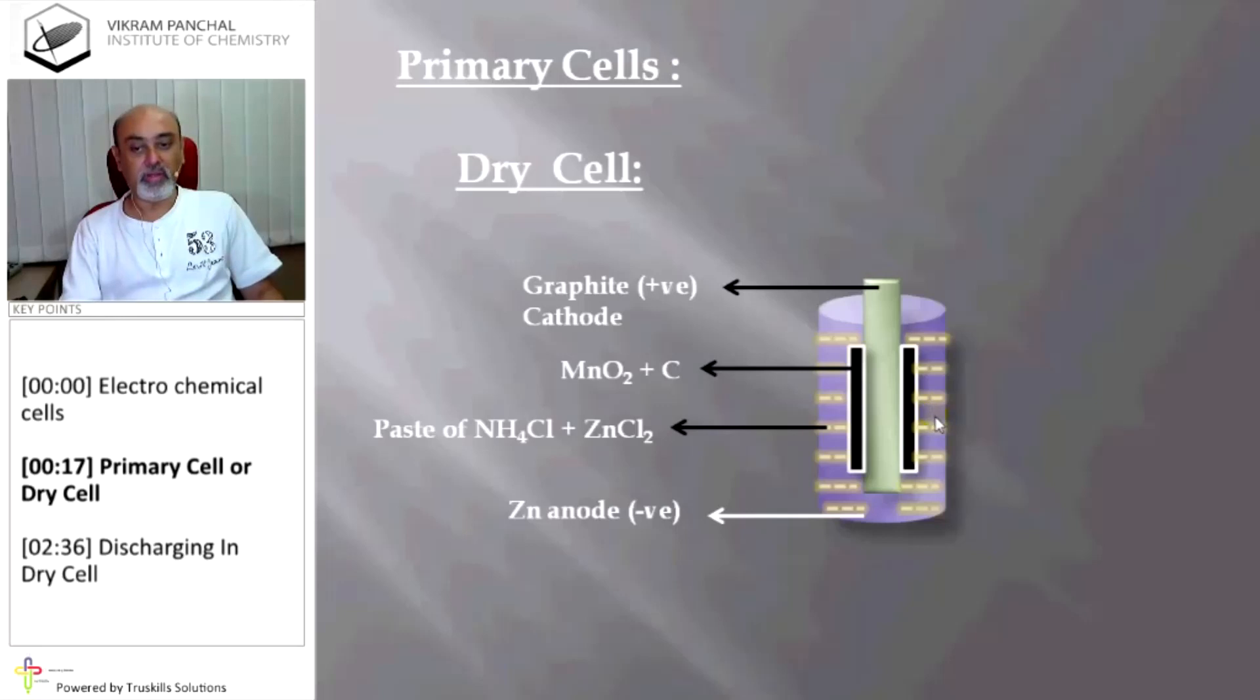Little amount of water is added so the paste should remain little moist and we have to cover it with the help of this zinc container. This is the construction of the dry cell in which anode is zinc and graphite rod is cathode.